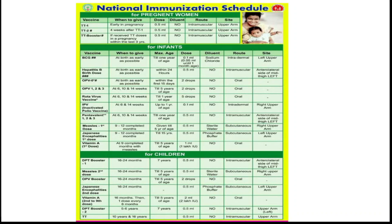Pentavalent vaccine is a combined vaccine containing 5 vaccines. It has three doses: first dose at 6 weeks, second dose at 10 weeks, and third dose at 14 weeks. It is given up to 1 year of age. The dose is 0.5 ml, intramuscular, at the anterolateral aspect of the left mid-thigh.